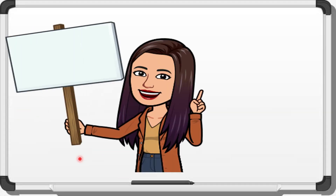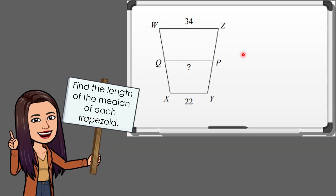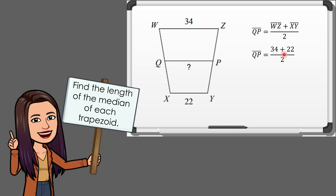Let us have these exercises — please test yourself. Number 1, find the length of the median QP of the trapezoid, given that the bases are WZ and XY. The median QP is equal to WZ plus XY divided by 2. Since WZ equals 34 and XY equals 22, we have QP equals 34 plus 22 divided by 2, which equals 56 divided by 2. Therefore, QP is equal to 28.